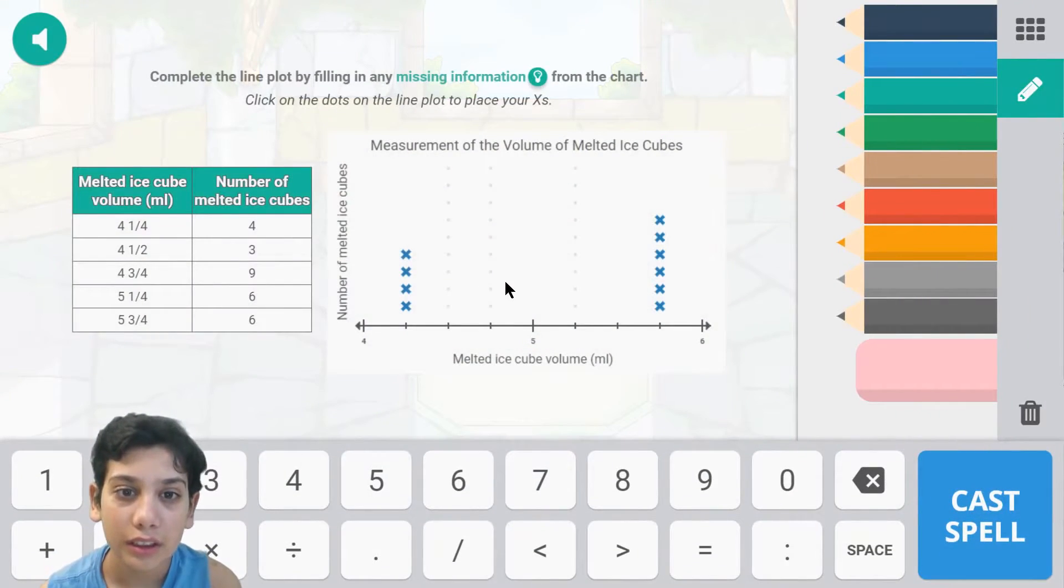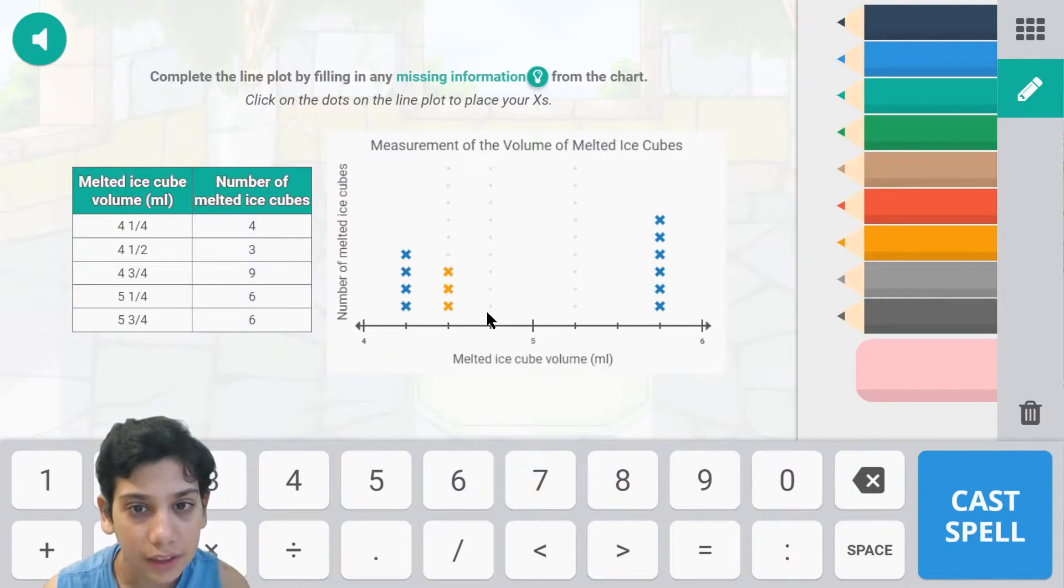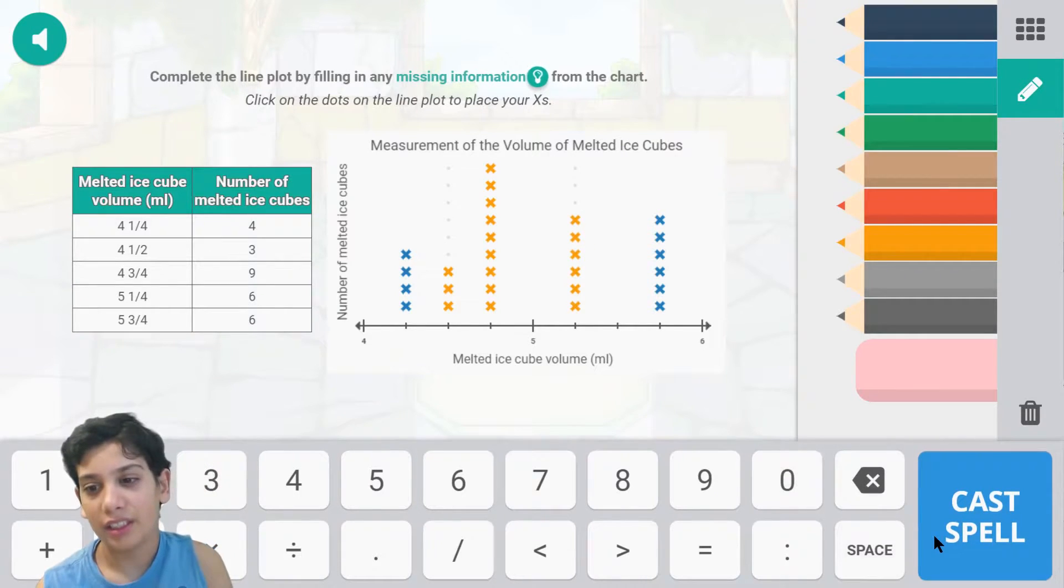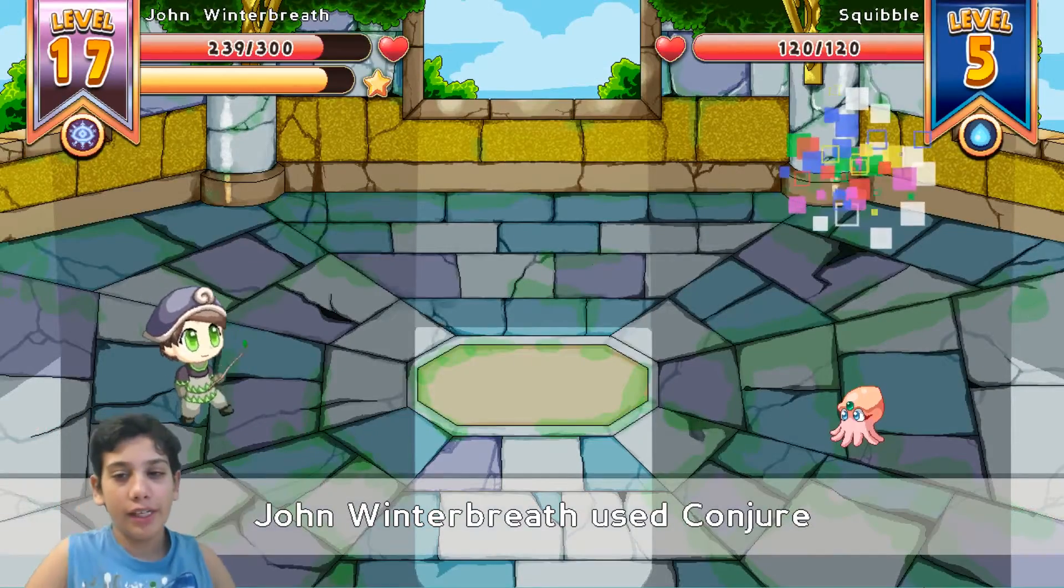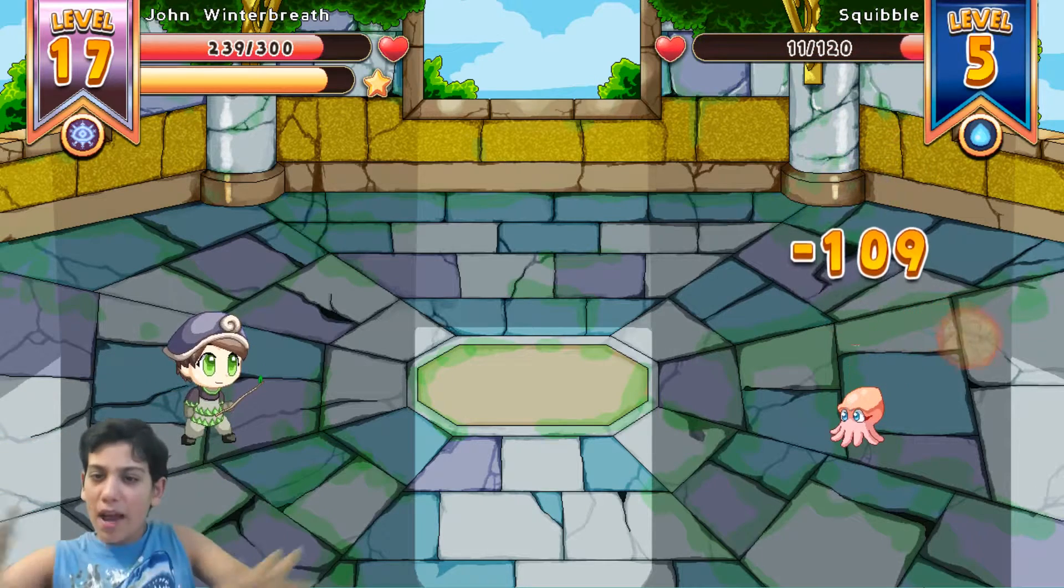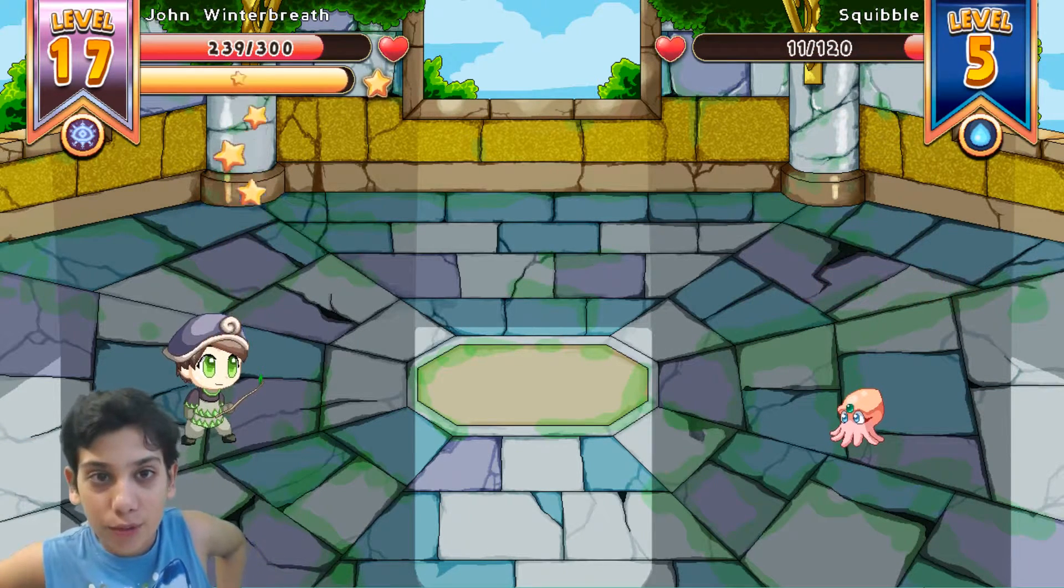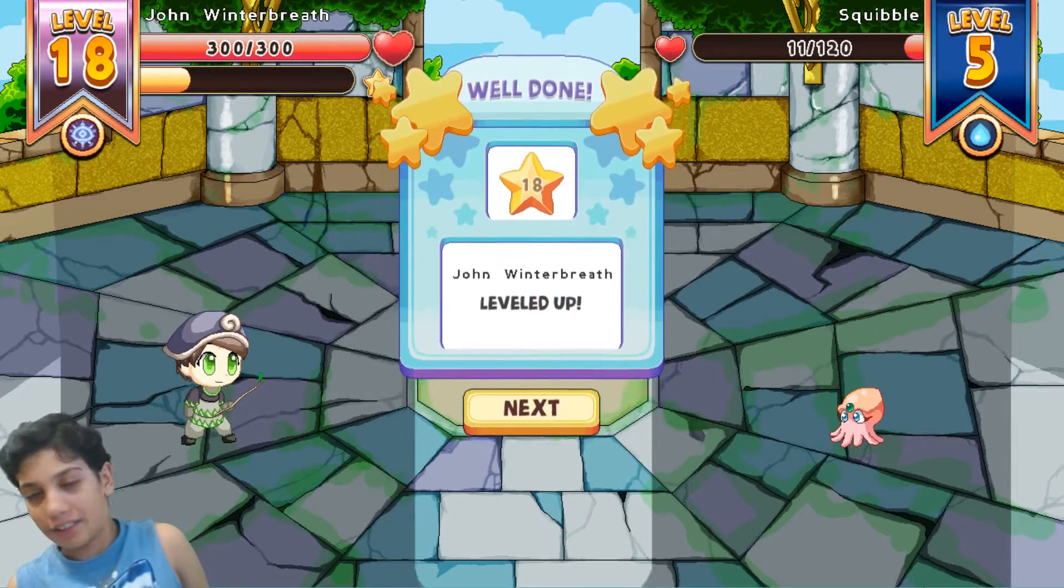Okay, attack and let's conjure. To figure out the answer to this line plot you look there and four and one half has three ticks, then five and one fourth has six ticks which is right there. Cast spell, viola correct! Oh yeah 109 damage! I eliminated it, I destroyed it, I defeated it with just one single blow.